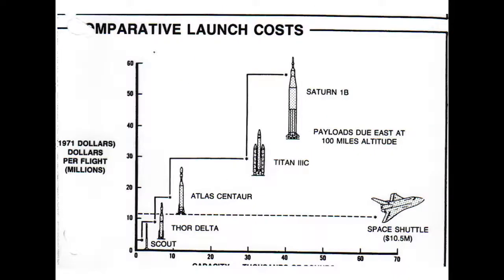This chart shows the 1971 cost per flight for the Thor, the Atlas, the Titan 3C, the Saturn 1B, and the shuttle — payload to orbit. You can see that the thing that was really missed in the shuttle was the $10.5 million cost per flight.